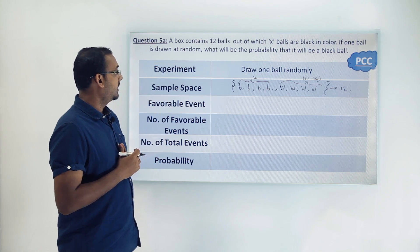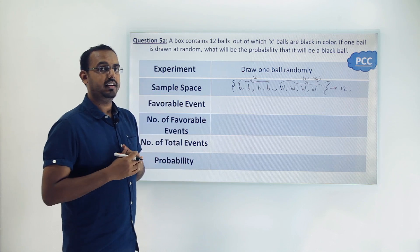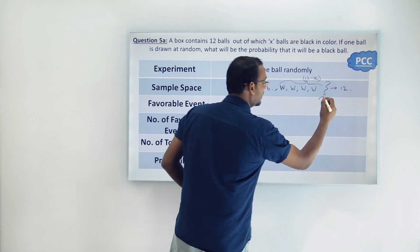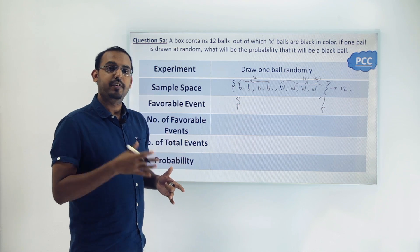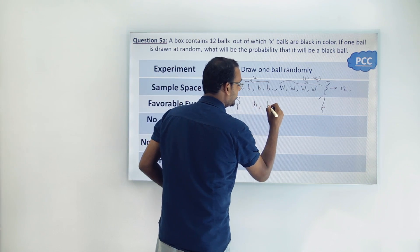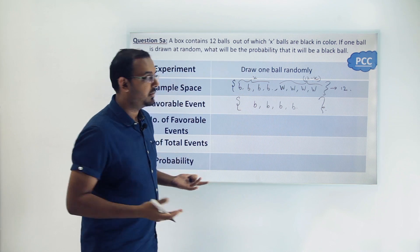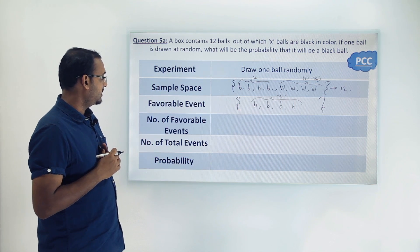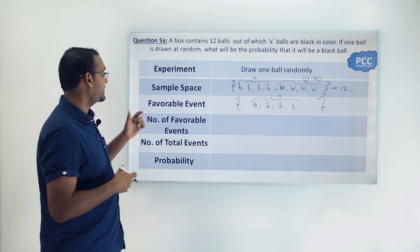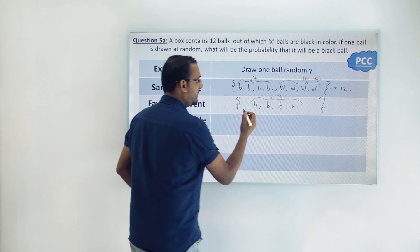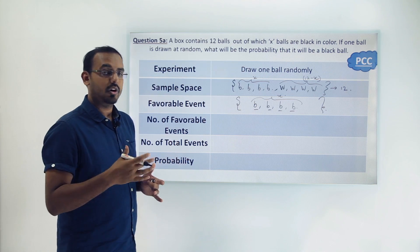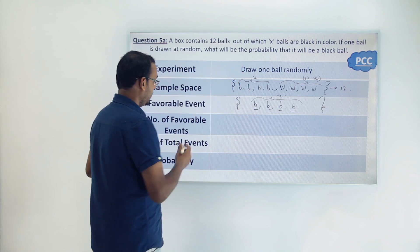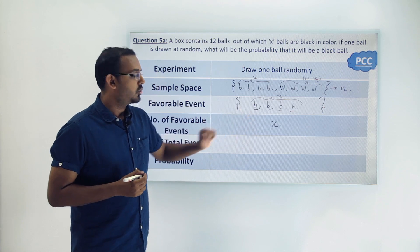The favorable event here is drawing a black ball when we draw one ball at random. We know that there are x balls in the bag which are black in color, so any one of those x balls being drawn is a favorable event. This gives us a favorable event set containing only black balls — some x number of black balls. So there are x ways in which we can draw a black ball out of the bag.